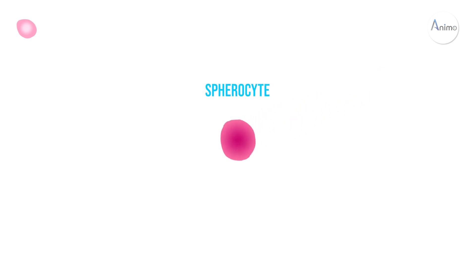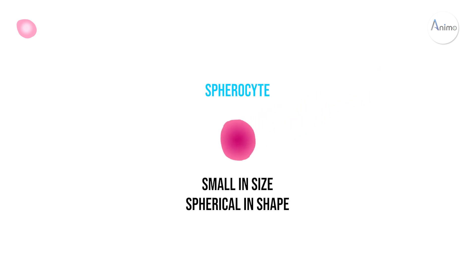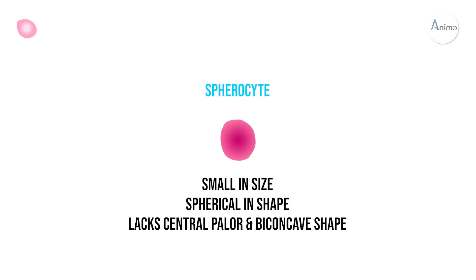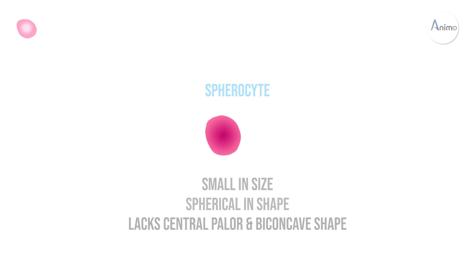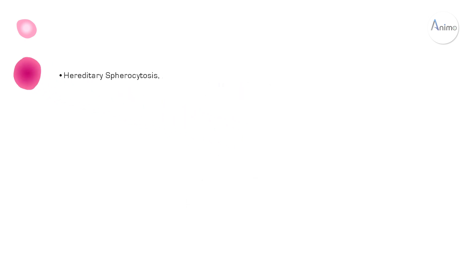The next abnormal morphology of RBC is spherocyte. This is an RBC small in size, spherical in shape, and it lacks a central pallor and the biconcave shape. It is found in hereditary spherocytosis and autoimmune hemolytic anemia.